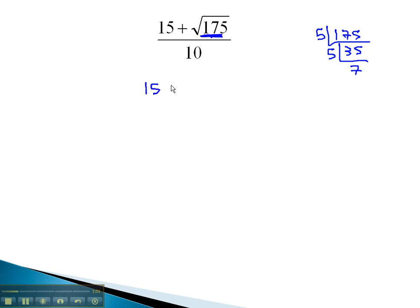Now, the expression is 15 plus the square root of 5 squared times 7, all over 10.